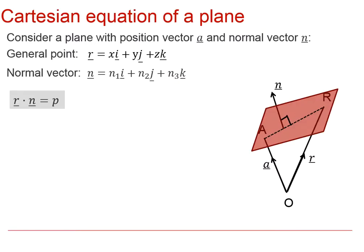We've seen before that we can write the equations of planes by a given point and a normal vector and we get this equation here, r dot n equals p.